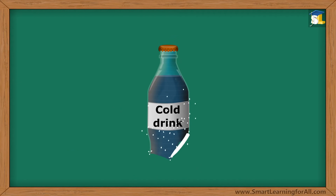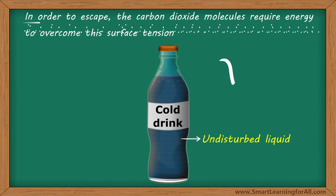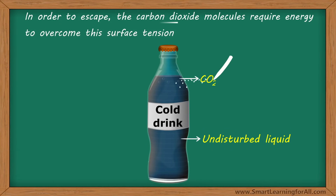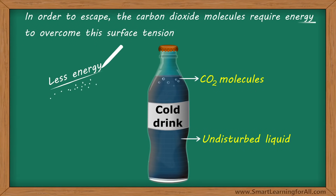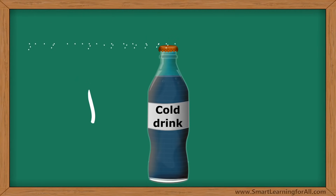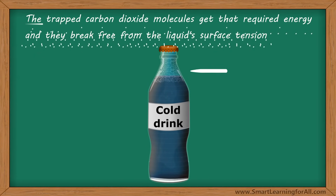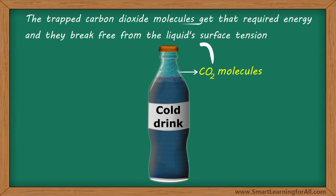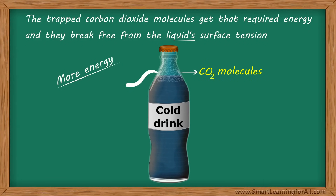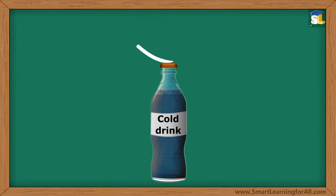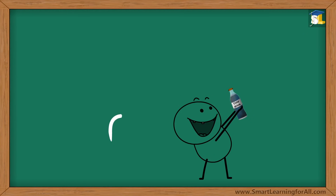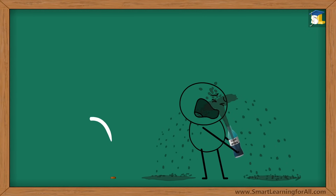In reality, when the bottle is sealed, the undisturbed liquid has surface tension. In order to escape, the carbon dioxide molecules require energy to overcome the surface tension. Now, when we shake the cold drink bottle before opening, the trapped carbon dioxide molecules get that required energy and they break free from the liquid's surface tension. As a result, the fizz rises quickly and explodes out.